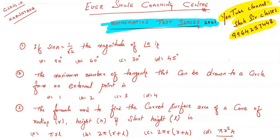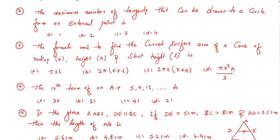Question number two: the maximum number of tangents that can be drawn to a circle from an external point is: option a) one, b) two, c) three, d) four. You need to find the correct answer.